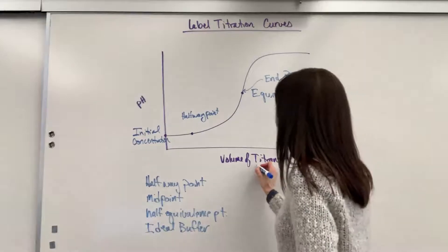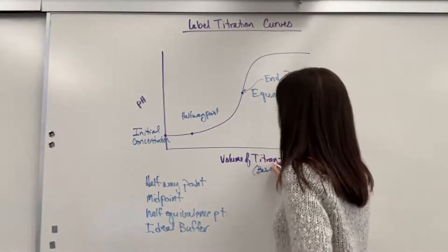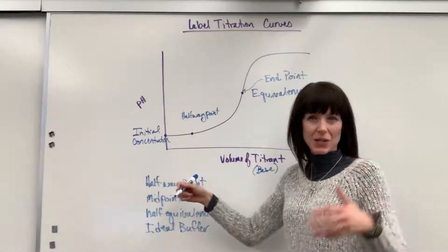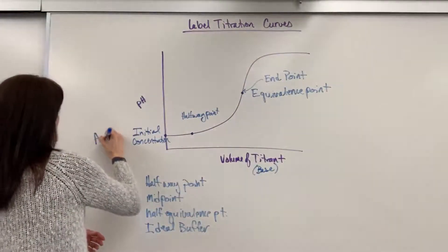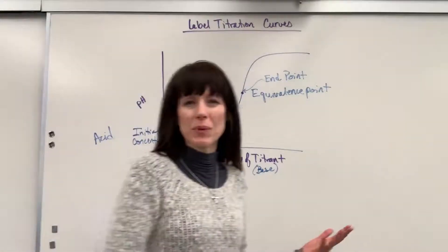So this is going to be a weak acid that is titrated with a strong base. The volume of this titrant down here, this would be your base. And over here, because I'm starting at a low pH, this is going to be your acid, your weak acid. So you'd be at like a pH of about 3.